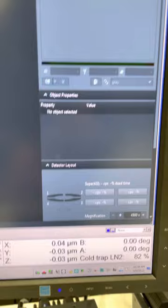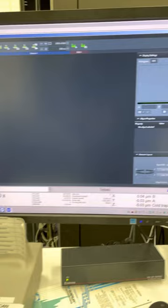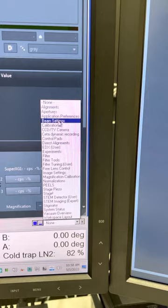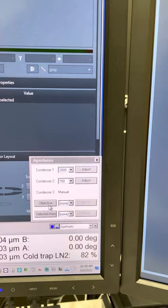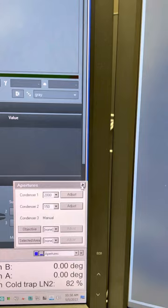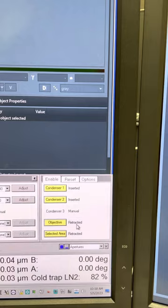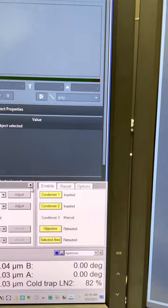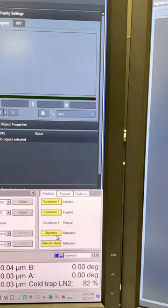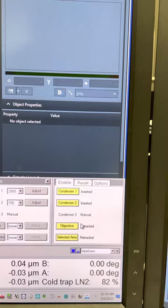Also make sure the objective aperture is retracted. If you see in the user interface at the right bottom corner, click this little arrow here and then click apertures. You see objective is gray, which means it's not inserted. But in order to double check, you can click this arrow here with the flat out button. Make sure the objective is yellow and reads retracted. The most critical is the objective aperture because it sits right below the specimen holder in a very constrained space.